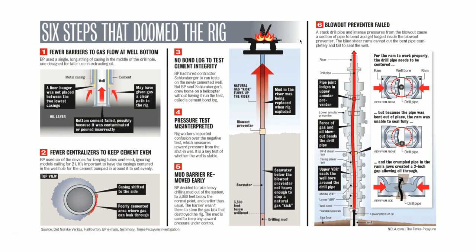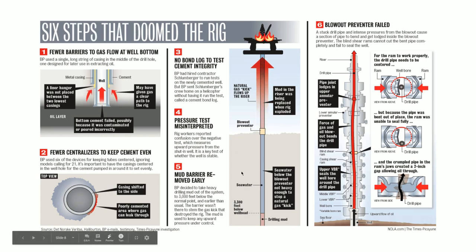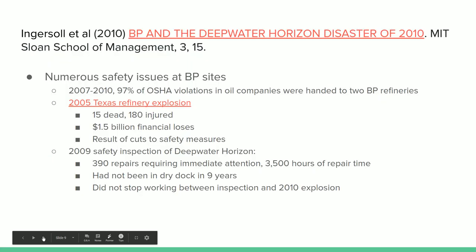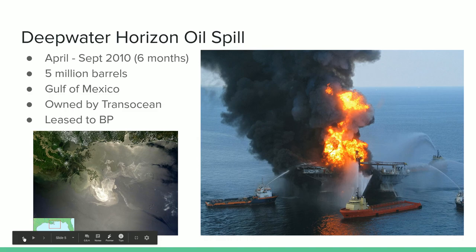At this point there was already fire on the rig, and the rig eventually went down underwater and crashed on the bottom. But the blowout preventer was just not stopping the leak, and it continued to leak for several months — from April to September of 2010.